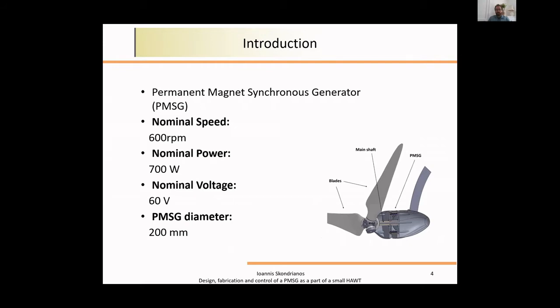The input I was given by the team was they wanted a system that could produce 700 watts at 600 RPM. Of course, I had to oversize the system a bit because I was working on 2D models, so I needed some margin. The nominal voltage was 60 volts and the diameter of the machine was 20 centimeters.